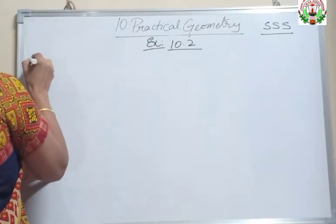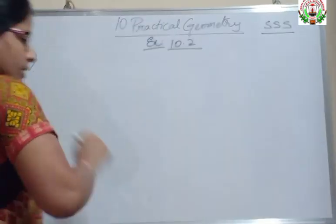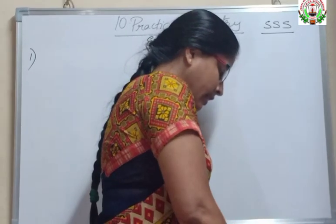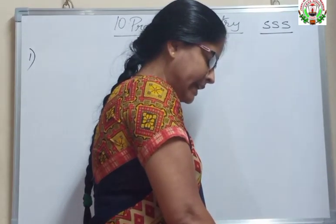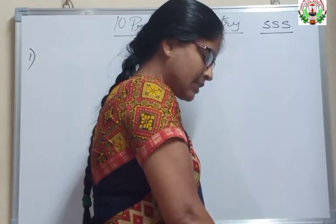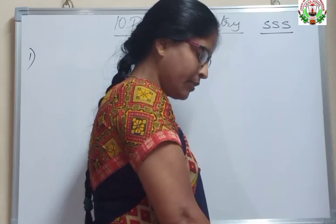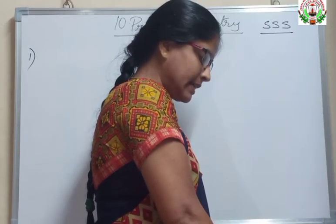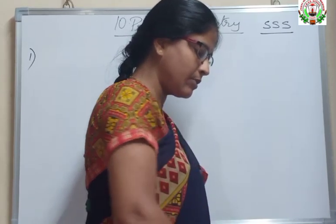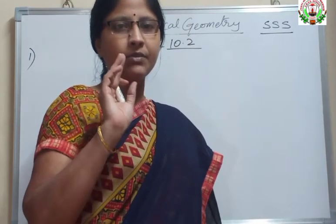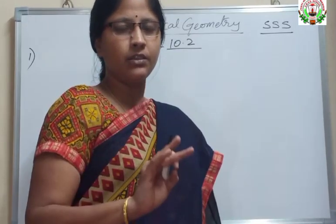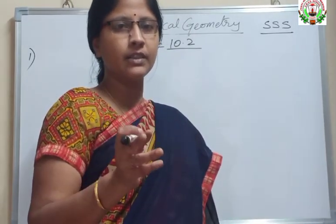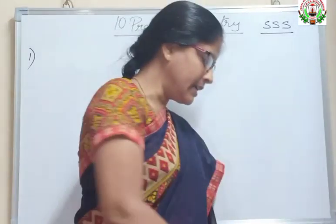So the first question: construct triangle XYZ in which XY equals 4.5 cm, YZ equals 5 cm, and ZX equals 6 cm. They have given all three sides and we have to use all three sides to construct triangle XYZ.